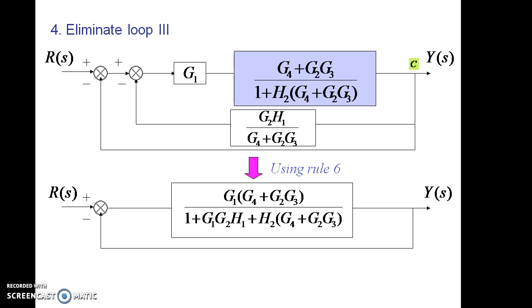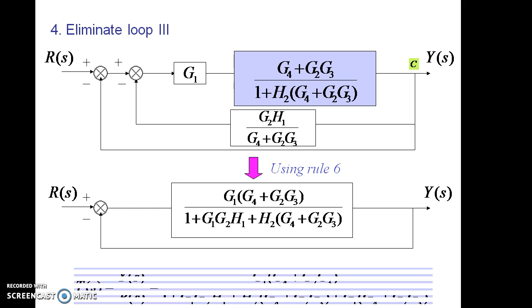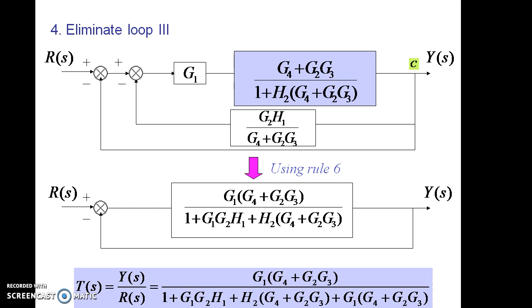Again, we have one more feedback path which is the outermost feedback path. This can also be resolved by using the transfer function formula, so that the final transfer function will be as given.